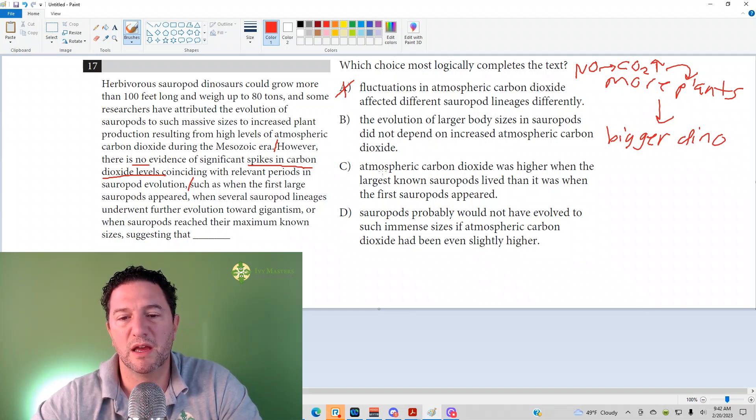Answer choice C: Atmospheric carbon dioxide was higher when the largest known sauropods lived than when the first sauropods appeared. That would be support for this theory, but we just said that there were not spikes in carbon dioxide levels. So this carbon dioxide was higher? Not. It says it wasn't.